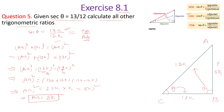Now our target is to calculate all other trigonometric ratios. The first is sine theta. Using SOH — sine equals opposite upon hypotenuse. The opposite side is AB = 5K, and hypotenuse is AC = 13K. So sine theta equals 5K upon 13K, and K cancels out, giving sine theta equals 5 upon 13.